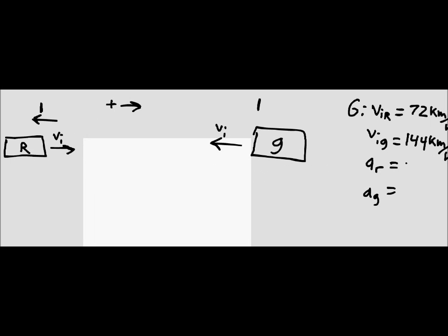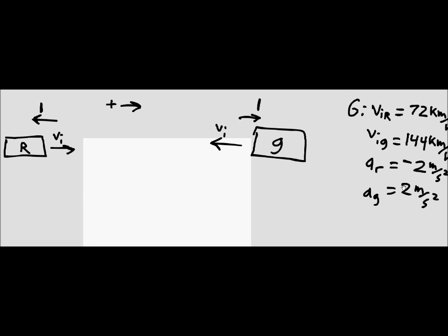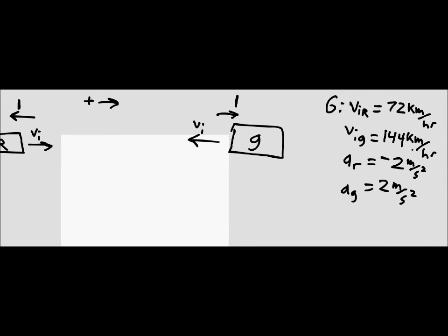Whenever acceleration is in the opposite direction of velocity, it's slowing the object down. On the green train, the acceleration is going in the positive direction, just to go against the velocity. We also run into a problem here because we have kilometers per hour and meters per second squared, so we need to convert the velocities into meters per second.